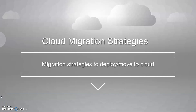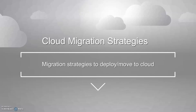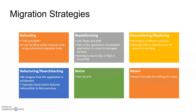Let us discuss cloud migration strategies. If you want to move your applications or servers to the cloud, you have to follow one of the migration strategies. There are six migration strategies. The first one is re-hosting, which is the easiest way of moving to the cloud. It is also called lift and shift, and it can be done either manually or by using automated migration tools.